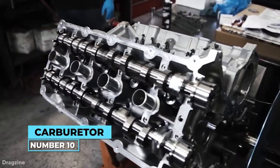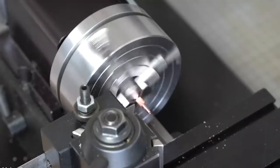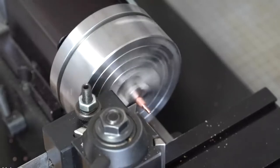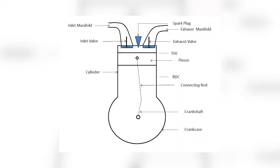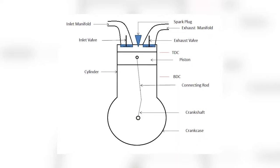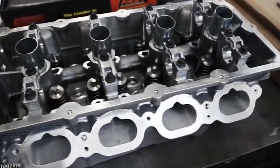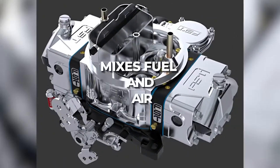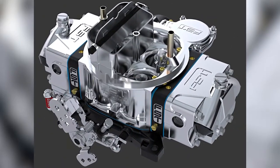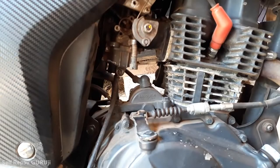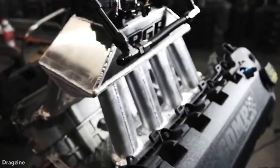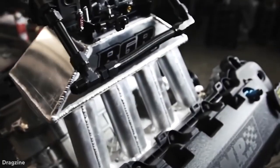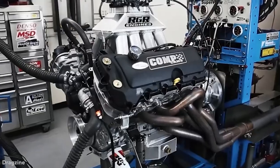Number 10: Carburetor. Carburation is the process of preparing a combustible fuel-air mixture outside the spark-ignition engine cylinder. A carburetor is a device that atomizes and mixes fuel and air. It is a mixing device used in a gasoline engine to supply the engine with an air-fuel mixture.